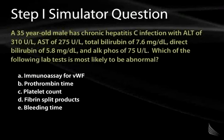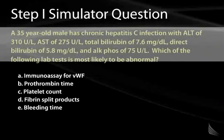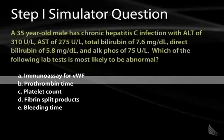Here's a question to approach after examining the normal clotting cascade. A 35-year-old gentleman has chronic hepatitis C with elevated liver enzymes, a total bilirubin of 7.6, a direct bilirubin of 5.8, and an alkaline phosphatase of 75. Which of the following lab tests is most likely to be abnormal? Since we discussed that the prothrombin time is elevated in liver disease, the correct answer is the prothrombin time. That concludes our discussion of normal hemostasis; we'll proceed with bleeding disorders and thrombocytopenia in the next section.